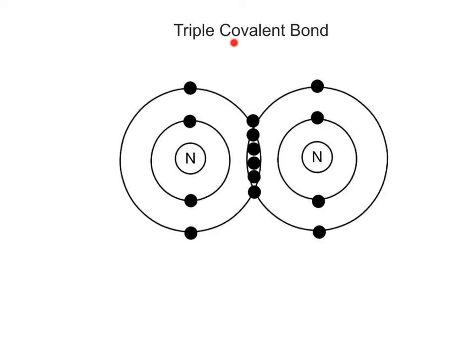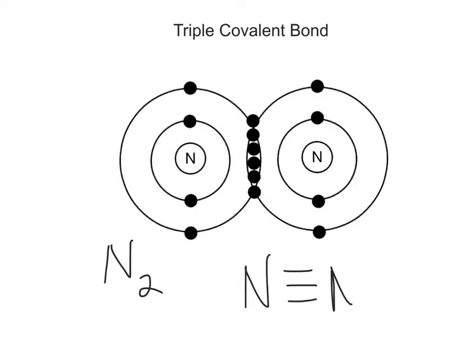A triple covalent bond forms when two atoms share three pairs of electrons. This is the strongest type of covalent bond. An example of a molecule held together by a triple covalent bond is nitrogen gas, with a molecular formula of N₂. The structural formula for nitrogen gas is written with three dashes between the nitrogen atoms, representing the triple covalent bond.